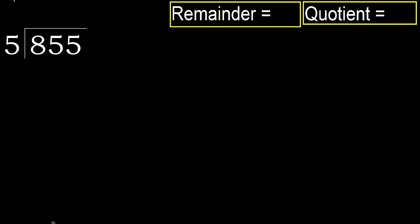855 divided by 5. 8 is not less, therefore start with 8. 5 multiplied by which number is nearest to 8 but not greater? 5 multiplied by 2 is 10 — that is greater. Multiply by 1 is 5, it is not greater. Subtract.